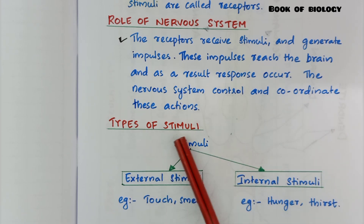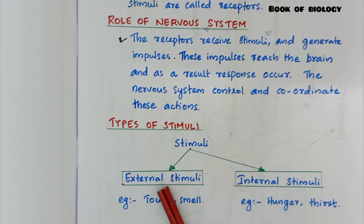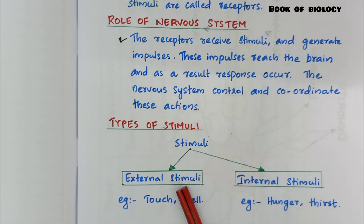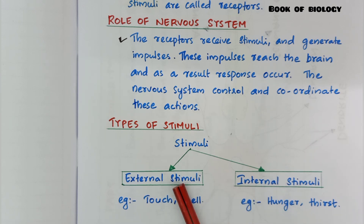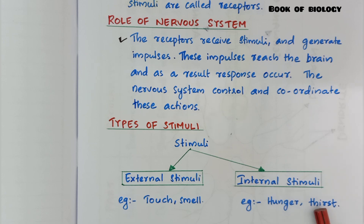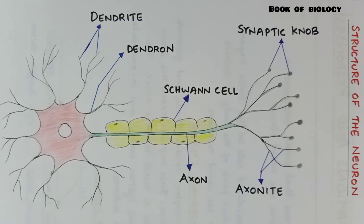Types of stimuli. There are two types: external stimuli and internal stimuli. External stimuli means what we feel from outside, and internal means what we feel from inside. Examples: touch and smell are external stimuli, and hunger and thirst are internal stimuli.